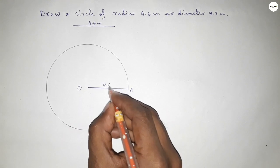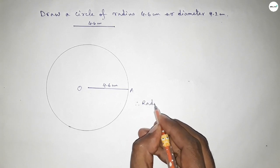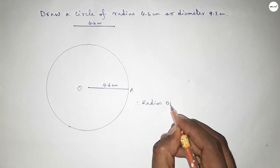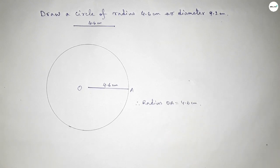So radius OA equal to 4.6 centimeter. Therefore, radius OA equal to 4.6 centimeter. That's all, thanks for watching. If this video is helpful to you, then please share it with your friend.